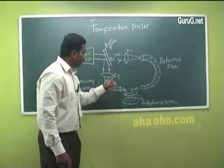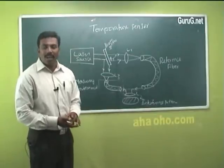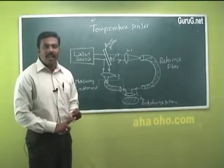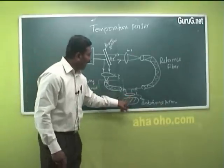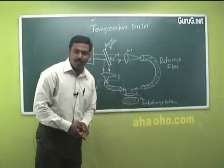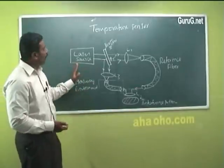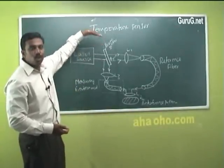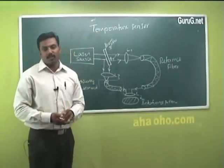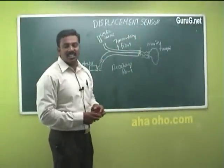The light from the reference fiber and the measurable fiber will have a path difference due to changes in parameters such as temperature and pressure. This causes an interference pattern, and with the help of this interference pattern we can accurately measure the change in temperature and pressure. This is how the temperature sensor senses variation in temperature and pressure.